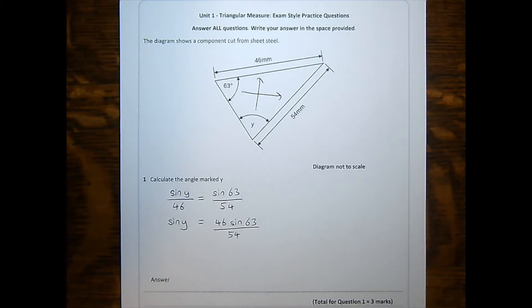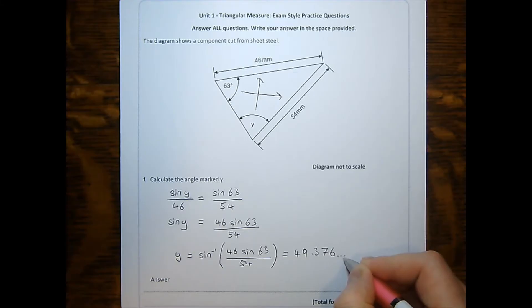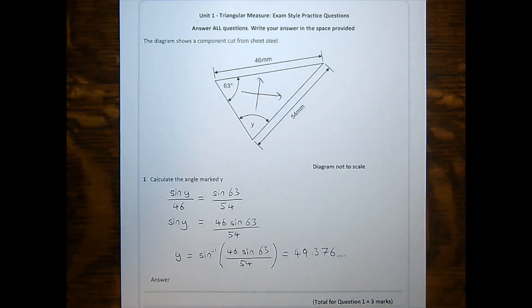The next stage is to do inverse sine of both sides. Putting this into my calculator will give me 49.376 etc. The question doesn't specify how much to round to, so I will round to three significant figures, giving me 49.4 degrees, showing units and stating my degree of accuracy.